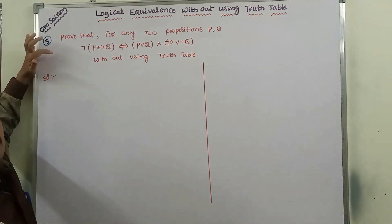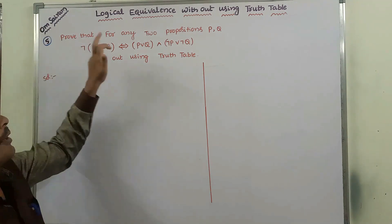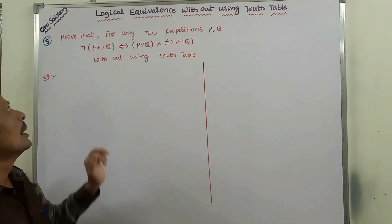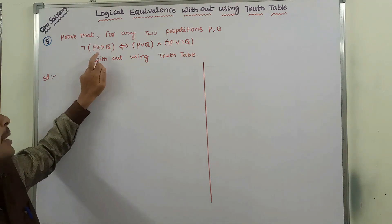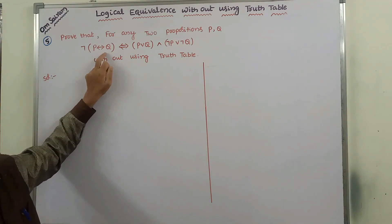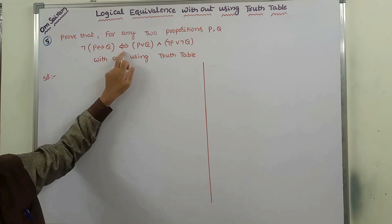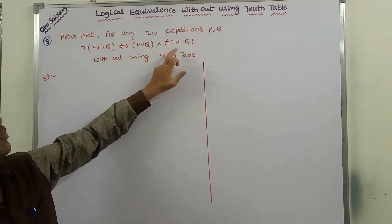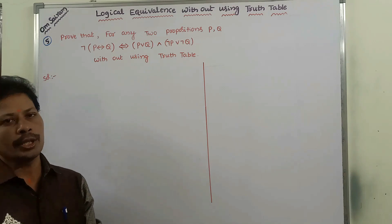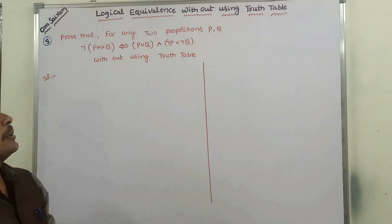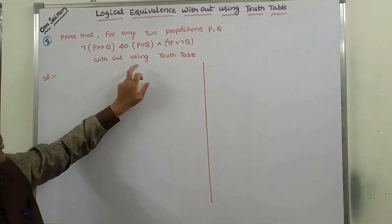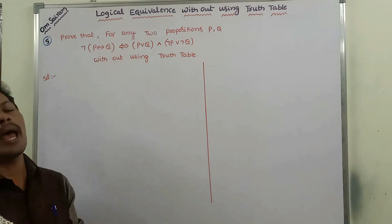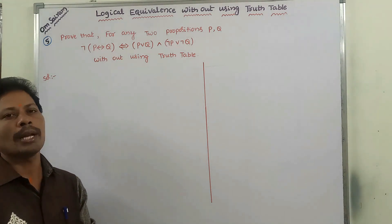The example problem is: prove that for any two propositions P and Q, negation of P biconditional Q is logically equivalent to P or Q, and negation P or negation Q, without using a proof table. This symbol is called the logical equivalence symbol.